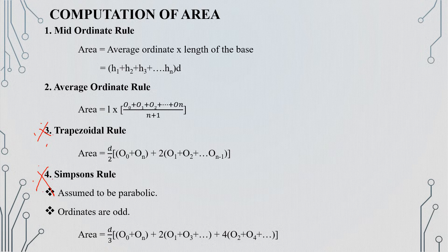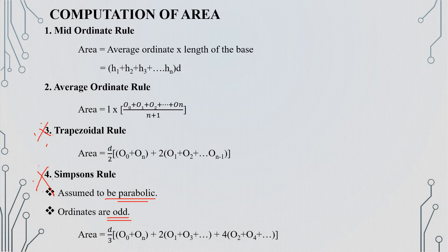For Simpson's rule, we assume the boundary is a parabola. The number of intervals must be even (odd number of ordinates). The equation is: area equals d divided by 3, multiplied by the first plus last ordinate, plus 2 times the sum of odd ordinates, plus 4 times the sum of even ordinates.